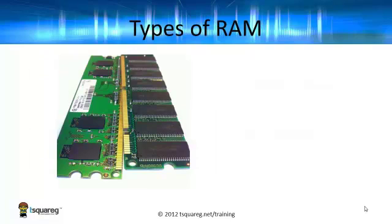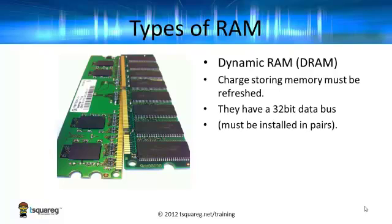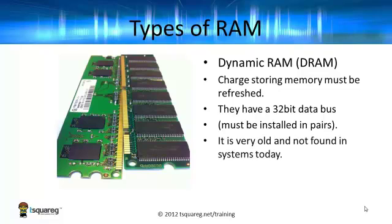There are different types of RAM that exist, and in your studies you will come across dynamic RAM — dynamic random access memory. What it relies on is a charge keeping the contents of memory where they are. If that charge is lost or not refreshed, the contents in memory are lost. Because it's an older technology, each RAM stick operated on a 32-bit data bus. Most modern motherboards use 64 bits in their data bus, and therefore these RAM sticks had to be installed in pairs. The data bus was primarily the FSB, the front side bus — it's a very old technology, not really found on a lot of systems today.